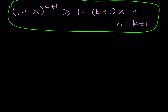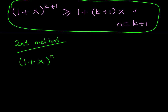Now let's take a look at this problem from a different perspective. This is going to be our second method. We'll start with the original problem: we are trying to prove that 1 plus x to the nth power is greater than or equal to 1 plus nx, where x is positive and n is a positive integer.